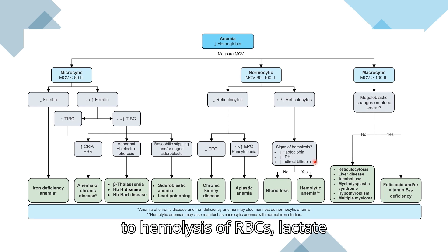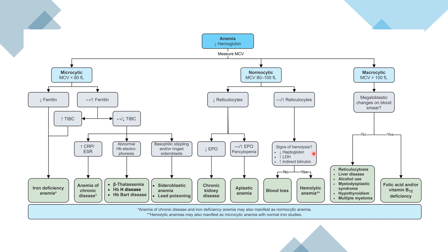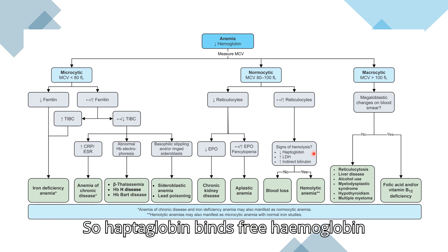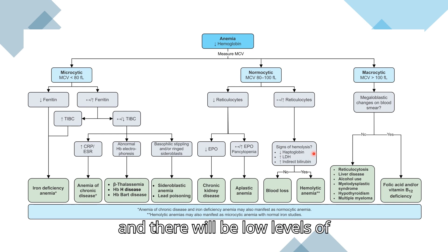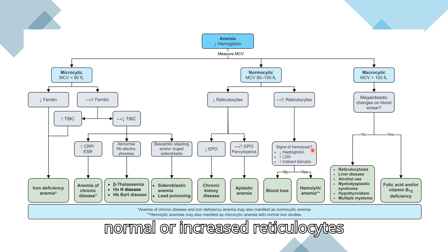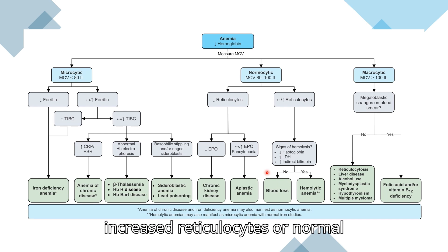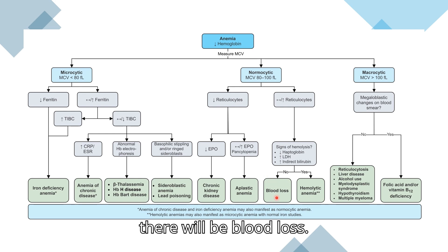Due to hemolysis of RBCs, lactate dehydrogenase enzyme is released from them, so LDH is high. Haptoglobin binds free hemoglobin; when there is hemolysis, there is plenty of free hemoglobin, so haptoglobin binds it and circulating haptoglobin levels fall. If signs of hemolysis are present with normal or increased reticulocytes in normocytic anemia, it is hemolytic anemia. If there are no signs of hemolysis with normocytic anemia, then it is blood loss.